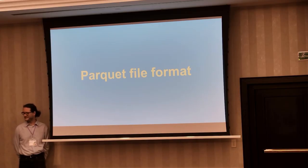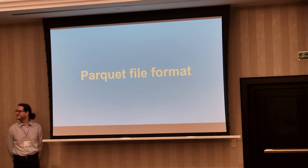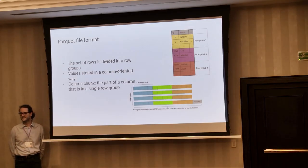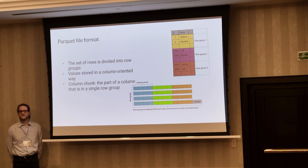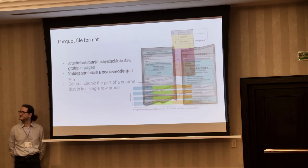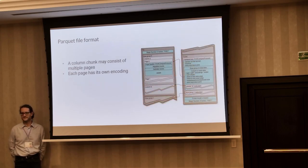Now let's talk briefly about the Parquet file format. In a Parquet file, you have a schema and a set of rows, and you divide these rows into row groups. Within each row group, you store the values in a column-oriented way. A column chunk is the part of a column that is within a single row group. A column chunk may further be subdivided into different pages, each of which may have its own encoding.